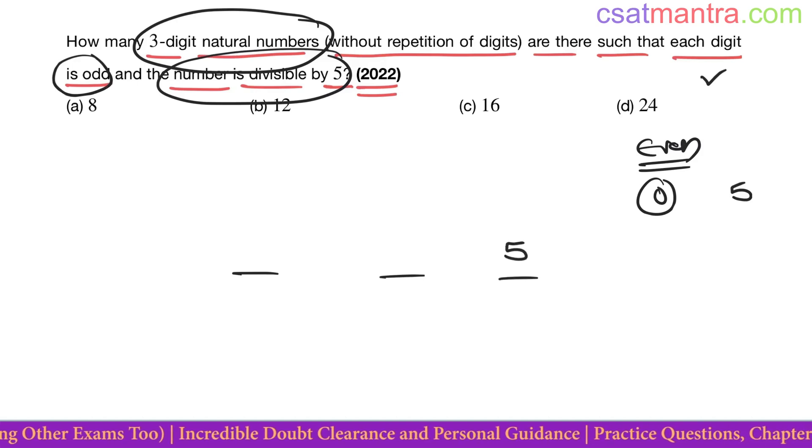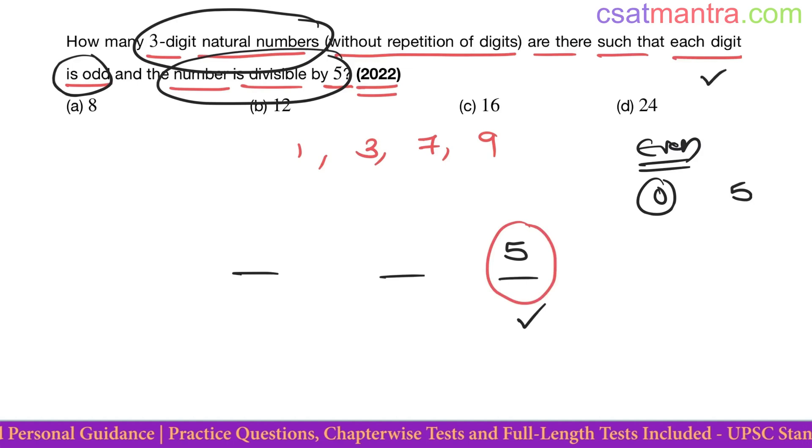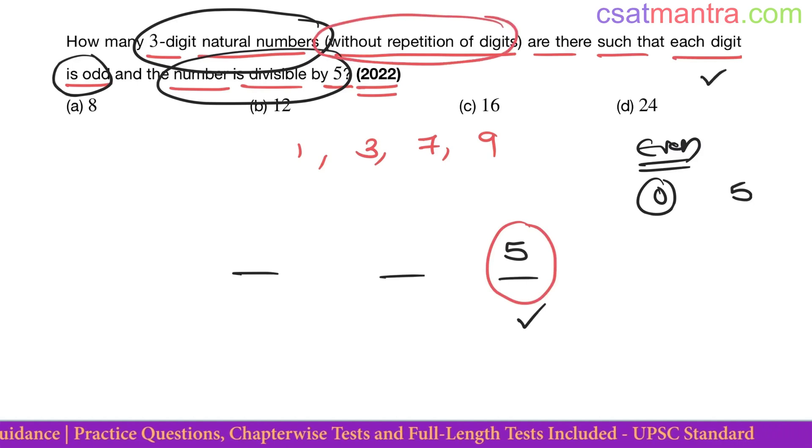So the last digit would be 5 only, because the number is divisible by 5. What are the remaining odd digits? 1, 3, 7, 9. 5 is already used. Digits without repetition - you cannot use the same digit twice. So now we have 4 digits left.